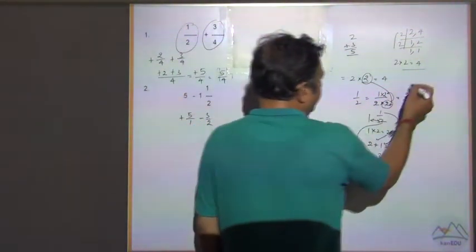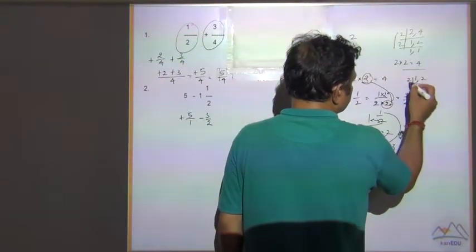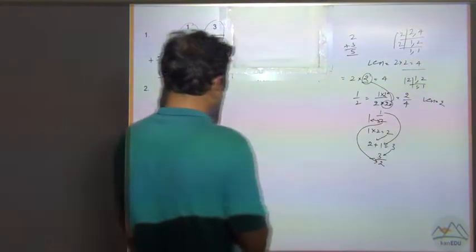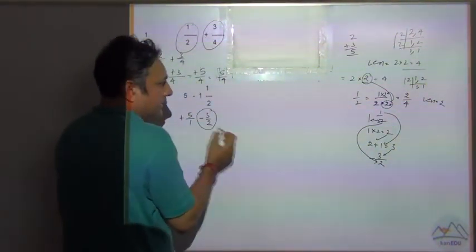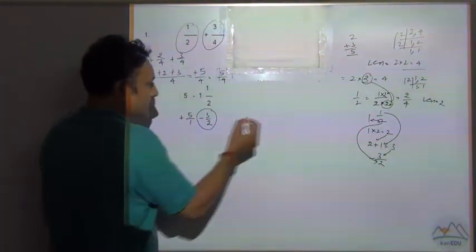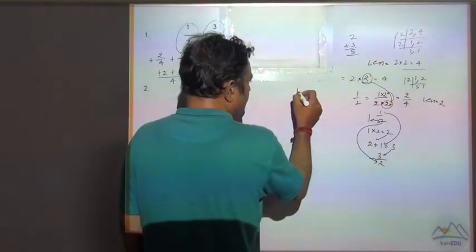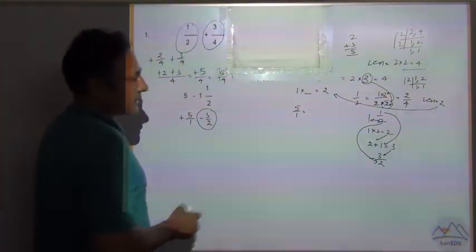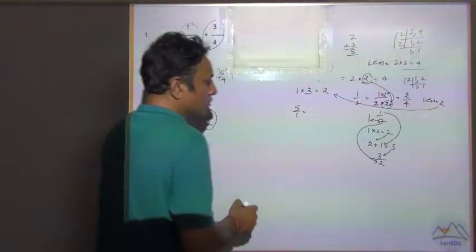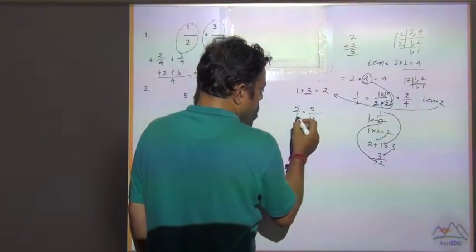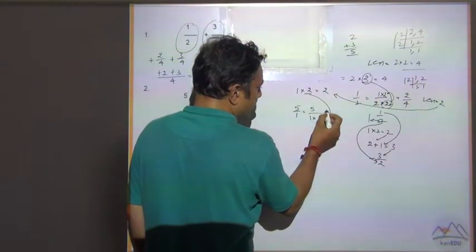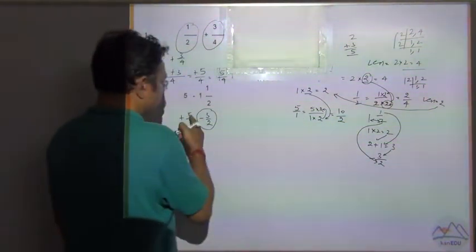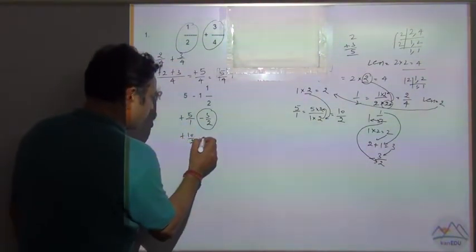Find the LCM of 1 and 2. Since 2 ones are 2, the LCM is 2. The fraction 3 by 2 already has its denominator equal to the LCM, so no change needed. For 5 by 1, we multiply the denominator 1 by 2 to get 2, and multiply the numerator by the same number: 5 multiplied by 2 equals 10. So 5 by 1 becomes 10 by 2.